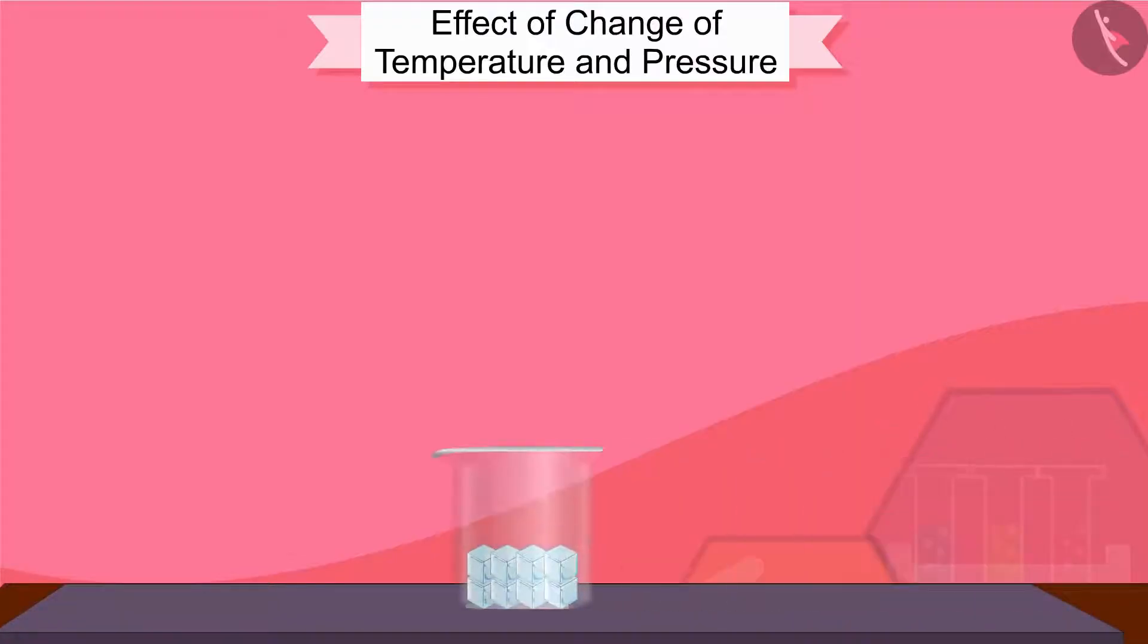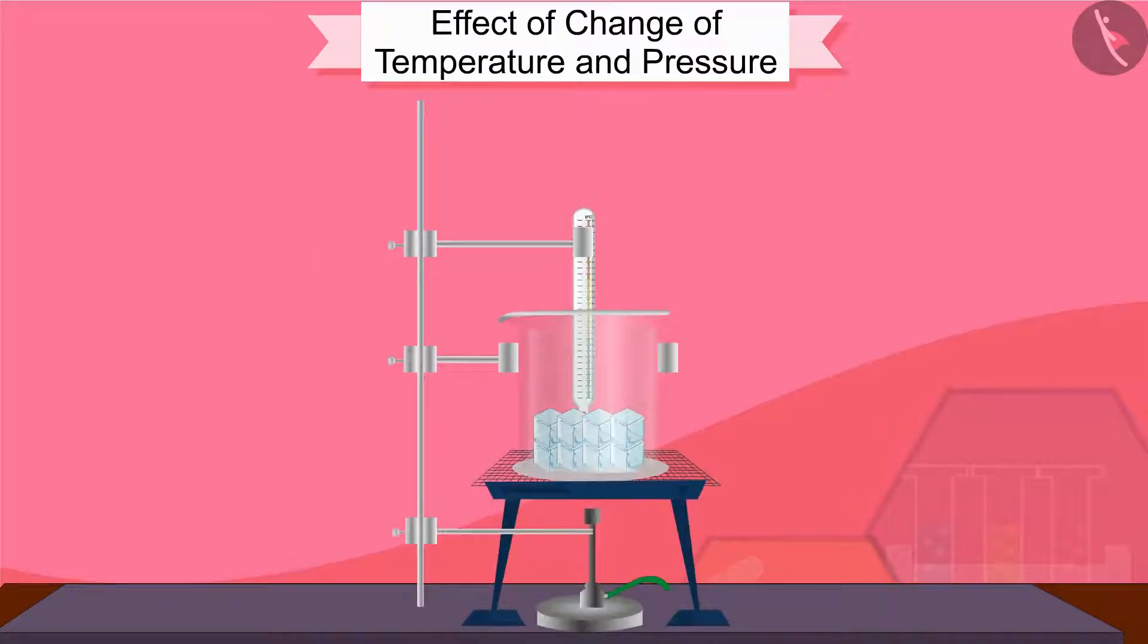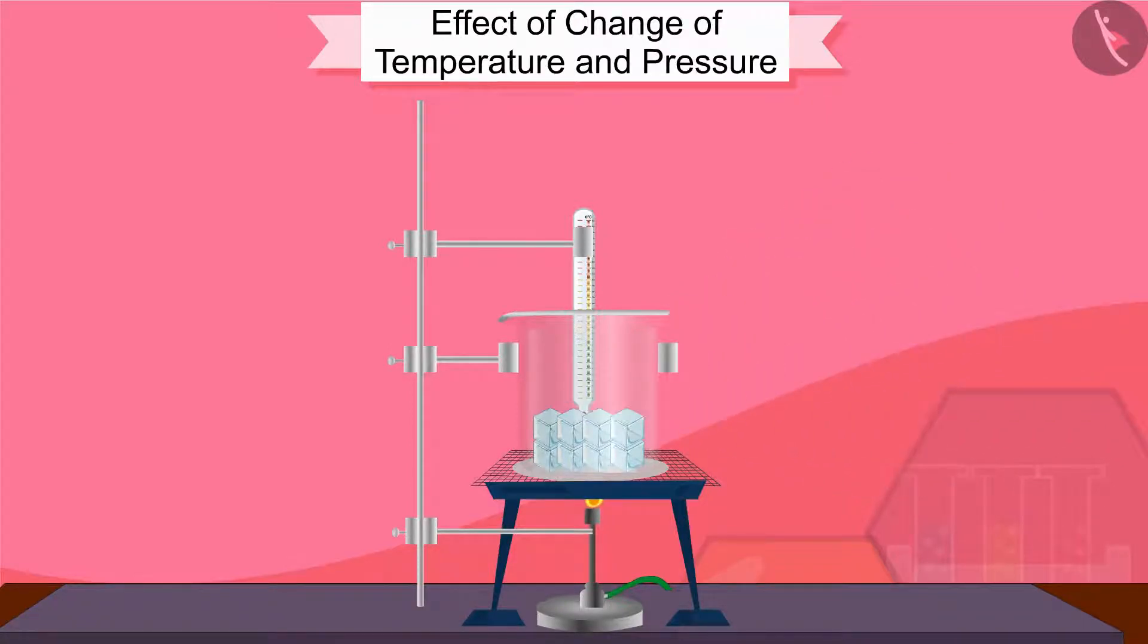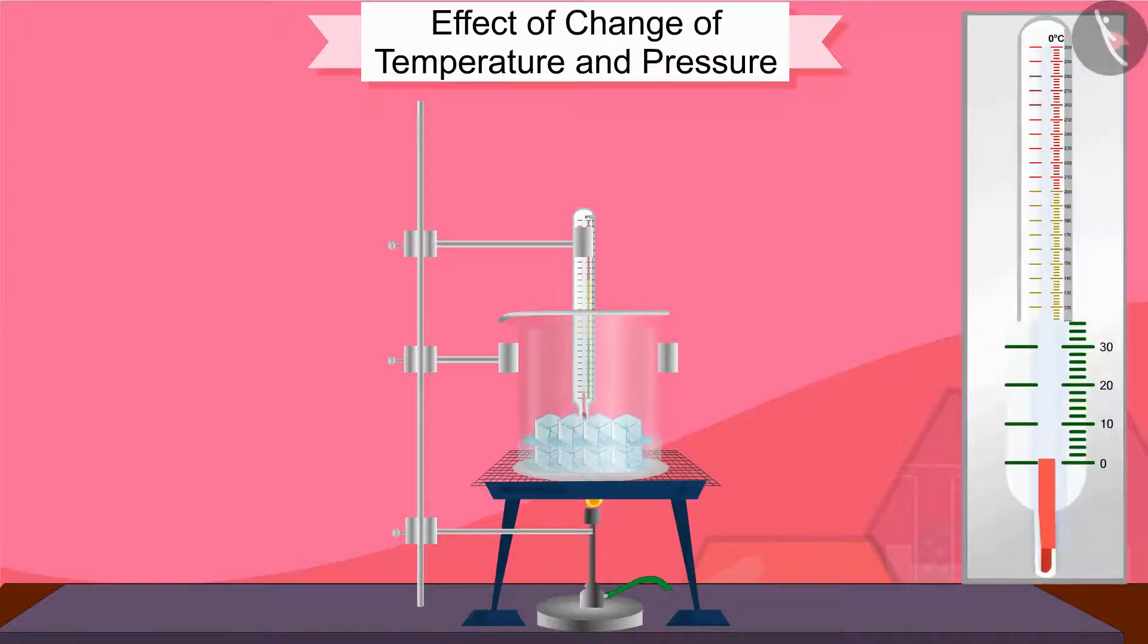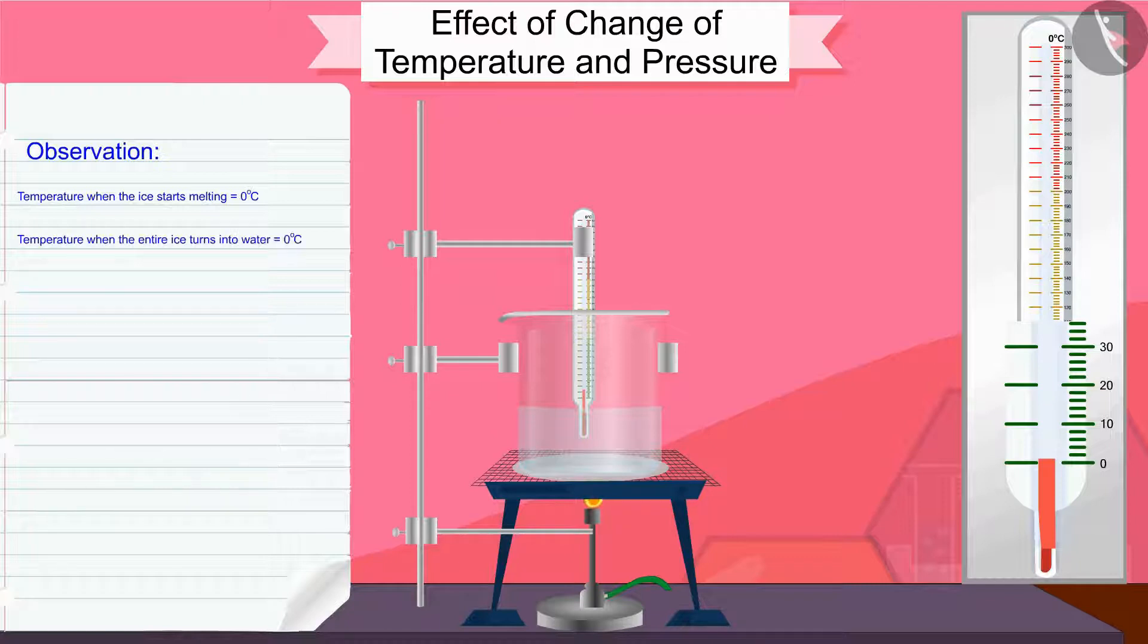Take 150 grams of ice cubes in a beaker and hang the thermometer so that the bulb is touching the ice. Start heating the beaker on low flame and note down the temperature when the ice starts melting. When the entire ice turns into water, note down the temperature again. Note down the observation in the change from solid to liquid.